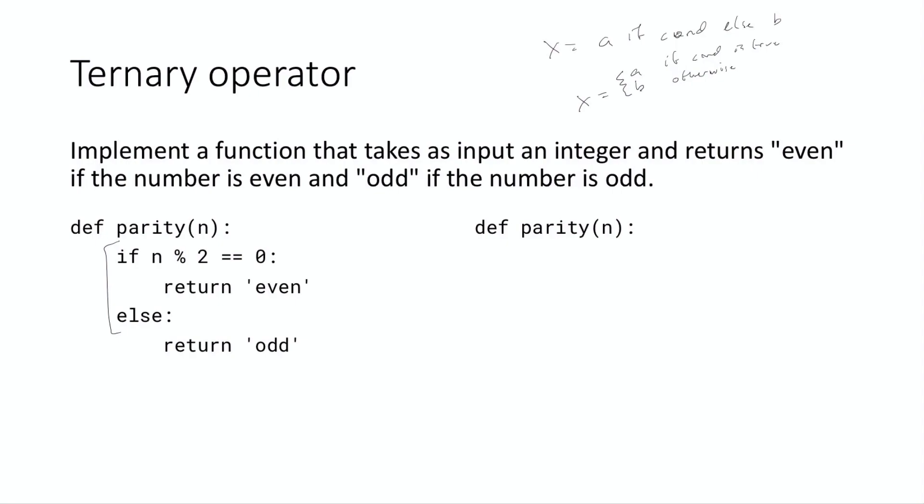I'll just quickly point out in other languages, it would probably look something like this. So x is equal to condition question mark a colon b. So if you're doing a C like language, C, C plus plus Java, and many other languages, it looks like that. So condition question mark a colon b. But in Python, it's a if condition else b. So it's a little bit different syntax, but it's the exact same concept.